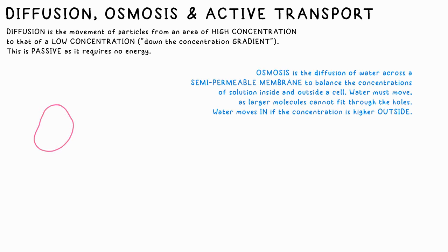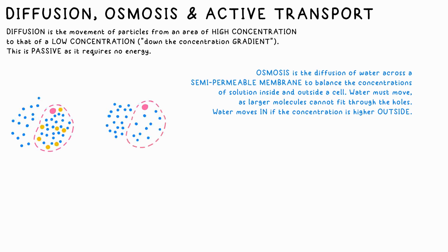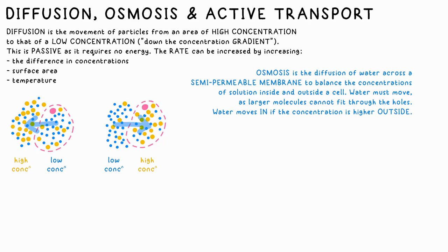Osmosis is the name specifically given to the diffusion of water across such a membrane. For example, if there is a higher concentration of glucose outside a cell, the glucose cannot diffuse in to balance the concentration, so instead the water moves out of the cell, resulting in a decrease in its mass. The rate of diffusion and osmosis can be increased by increasing the difference in concentrations, increasing the temperature, or increasing the surface area.